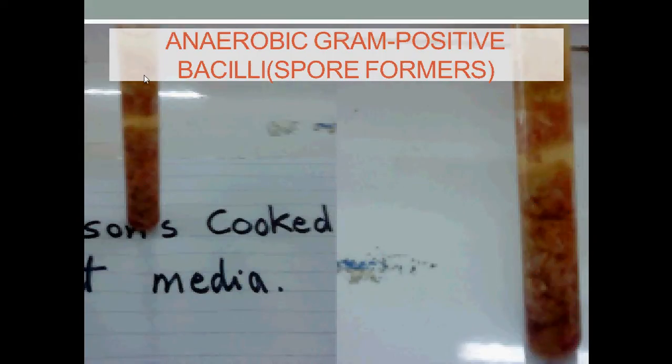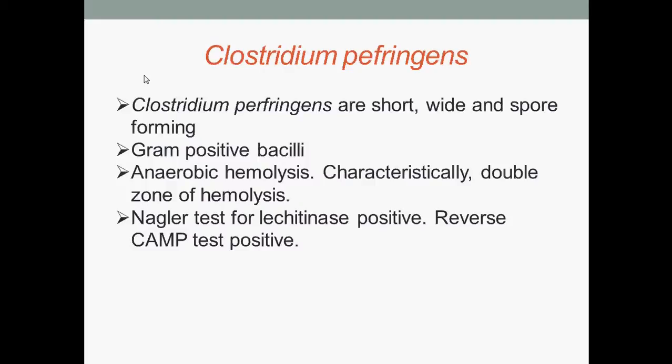Hello everybody. Today we're going to look at anaerobic gram-positive bacilli, spore formers. They are gram-positive because they retain the chemical crystal violet, hence they appear as purple rods under the microscope following gram stain. The bacteria we are going to look at today are all classified under the genus Clostridium — a genus of gram-positive bacteria belonging to the Firmicutes. They are obligate anaerobes, or strict anaerobes, capable of producing endospores.